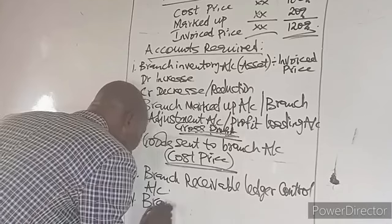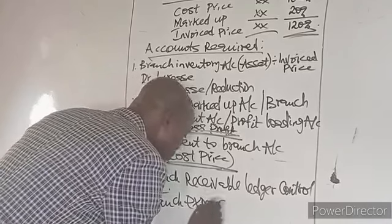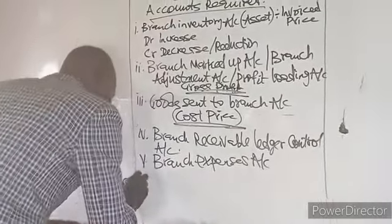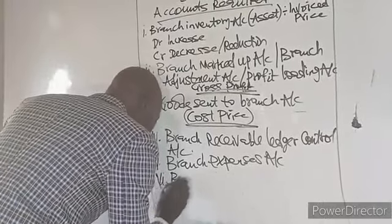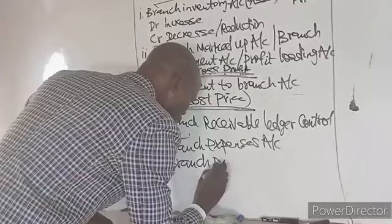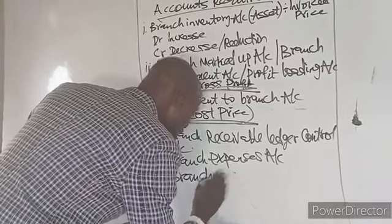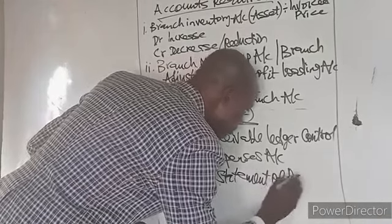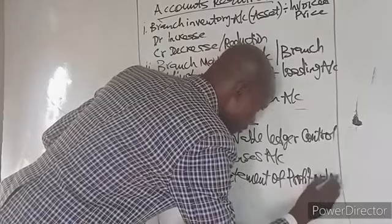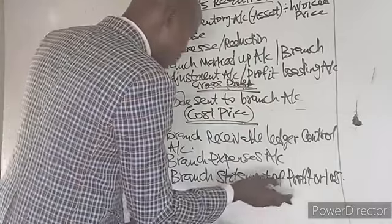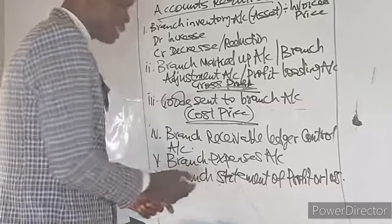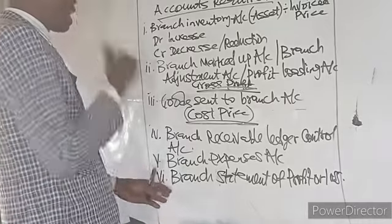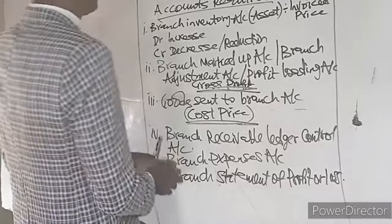Number five is the branch expenses account, which records the expenses of the branch. Finally, number six is the branch statement of profit or loss. This is the account where we ascertain the net profit or net loss of the branch. These are all the accounts required under this method.